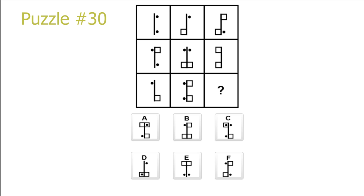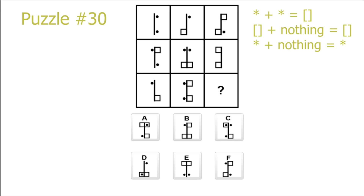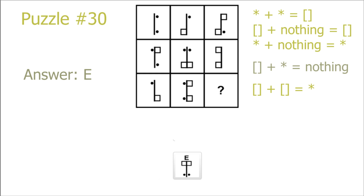Puzzle 30. Here we have an addition puzzle where we must figure out the addition rules. If we add a dot with a dot, what does that result in? From the first row: dot plus dot equals square; square plus nothing equals square; dot plus nothing equals dot. From the second row, a new rule: square plus dot equals nothing. And looking at the second column: square plus square equals dot. Using this for the last row or column, we get a square in the top left, a square in the top right, a dot in the bottom left, and a dot in the bottom right. So E is the correct answer.